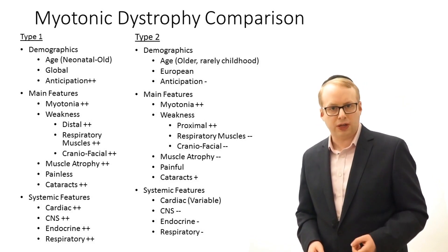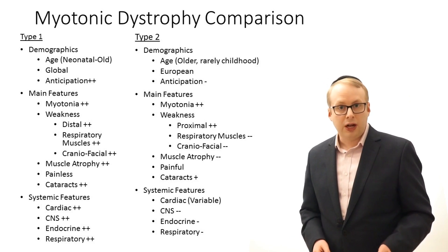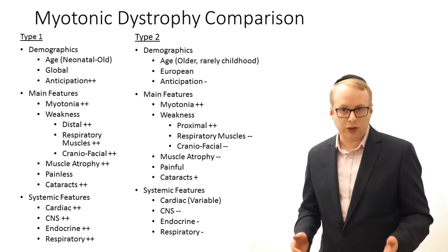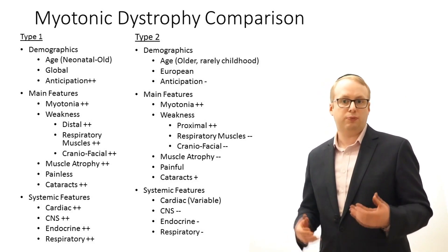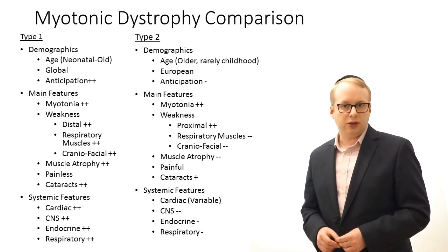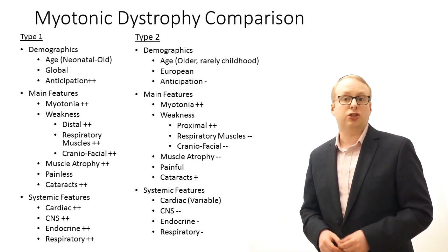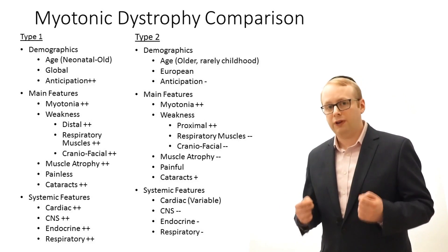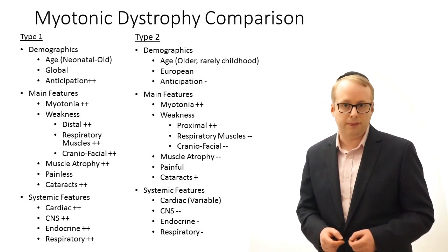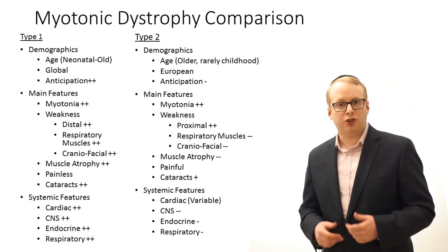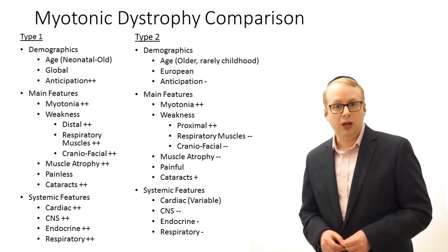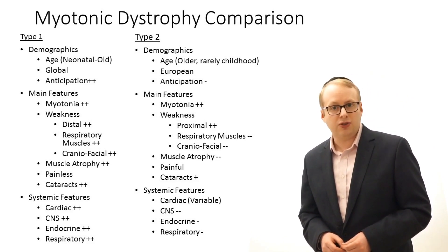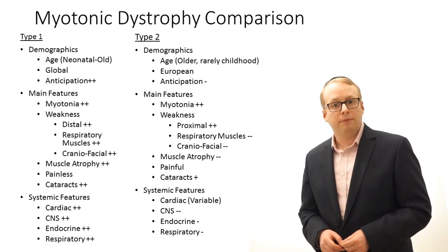Type 1 can occur at any age whilst type 2 occurs in older patients. Type 1 affects the distal muscles more than the proximal ones — the hands are more affected than the shoulders — and the opposite is the case for type 2, which mainly affects the proximal muscles. Clinical and EMG myotonia is very much a feature of type 1 but is only variably present in type 2. Facial and respiratory muscle weakness occurs in type 1 but rarely in type 2, and type 2 is associated with very severe muscle pain which is not present in type 1.